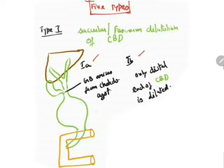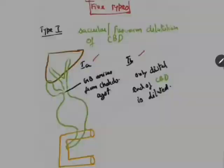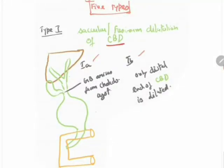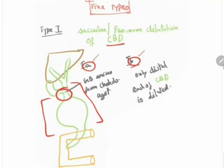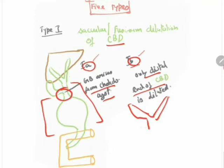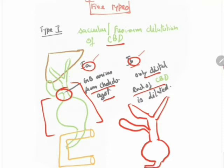Type 1 is a saccular or fusiform dilatation of the CBD. It can be further classified into 1A and 1B. In type 1A, the gallbladder arises from the choledochal cyst itself. In type 1B, only the distal end of the bile duct is dilated — from the confluence of the left hepatic, right hepatic, and cystic duct, the bile duct is normal, with dilatation occurring only distally.